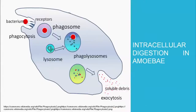The intracellular digestion in amoeba can be shown through a diagram. The amoeba extends two pseudopodia — false feet — around a bacterium. In the next step, the amoeba rounds off the bacterium through its pseudopodia into the cell, forming a phagosome.